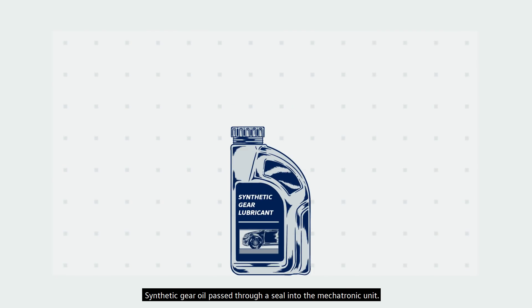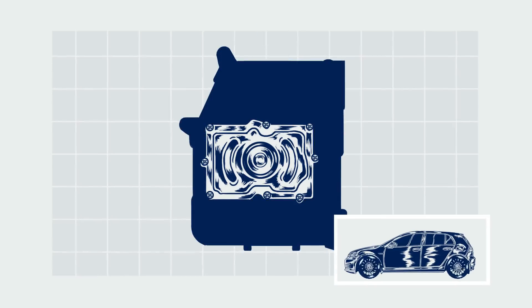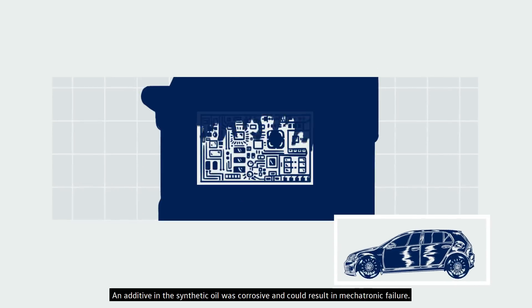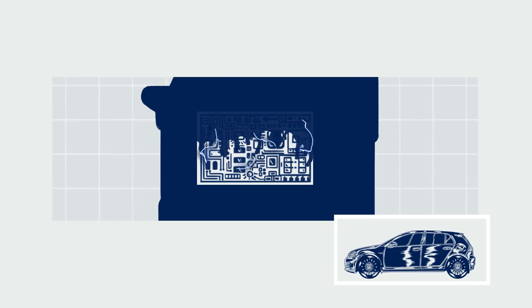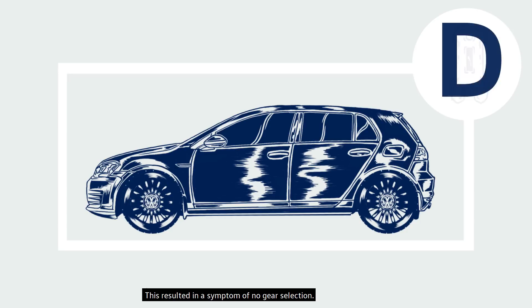Synthetic gear oil passed through a seal into the mechatronic unit. An additive in the synthetic oil was corrosive and could result in mechatronic failure. This resulted in a symptom of no gear selection.